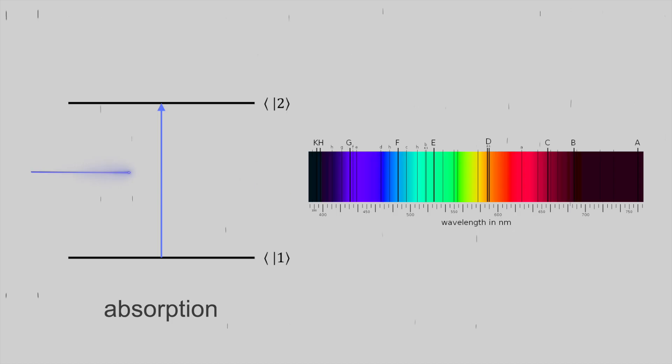Now it's really important to keep in mind that transitions are only allowed between discrete energy levels, such as the two shown above. And this leads to emission lines and absorption lines, which are specific for every element. You may have heard of the Fraunhofer absorption lines.